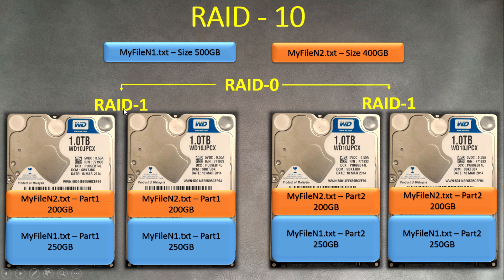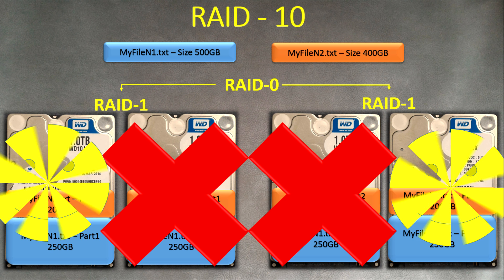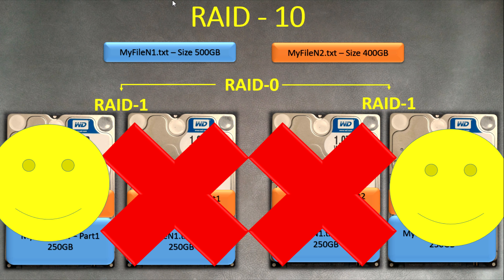However, if both failed disks are from the same mirrored pair, then you only have part two of the files and your data is completely lost — unrecoverable. But what are the chances that two disks in the same pair fail within the same minute or five minutes? It's extremely rare. So RAID 10 is definitely a great redundancy option — your data will be available. It's simply built from RAID 1 and RAID 0 combined. See you next lesson!